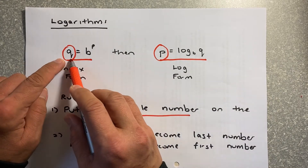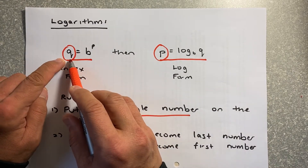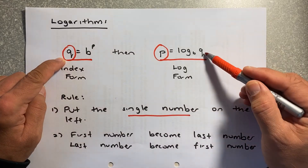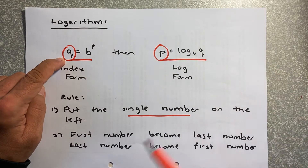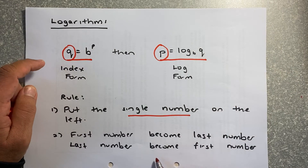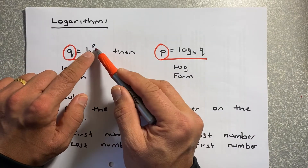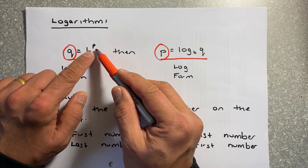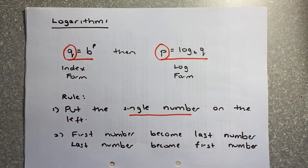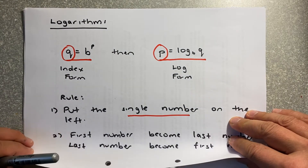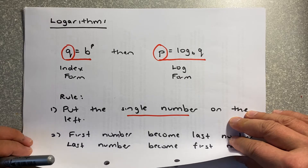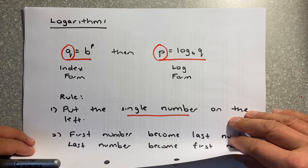For example, if you change Q into the log form, Q ends up at the last number at the end, and the last number becomes the first number — P to the power of P will become the P in front. This is how you remember the formula to solve this equation. We shall now look at some examples and work through logarithm.